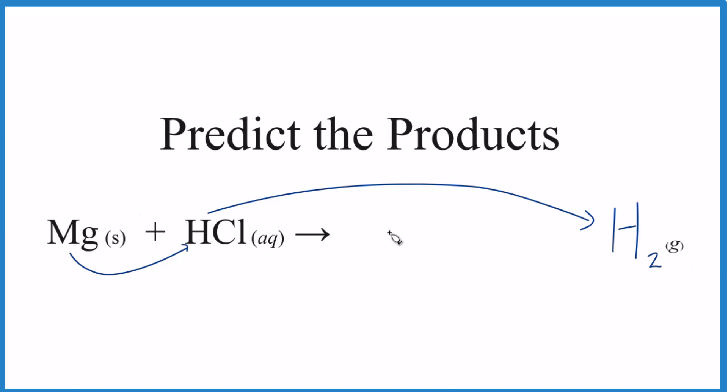Then the magnesium, that'll be with the chlorine, MgCl. But the thing we have to do is make sure the charge is balanced. This is a metal and a non-metal. It's an ionic compound. We need to make sure the charge balances.